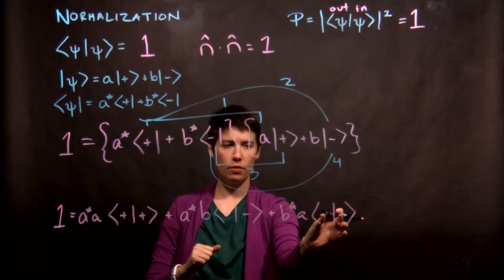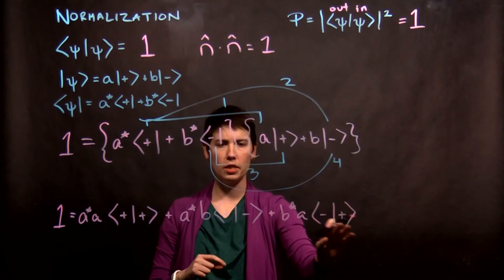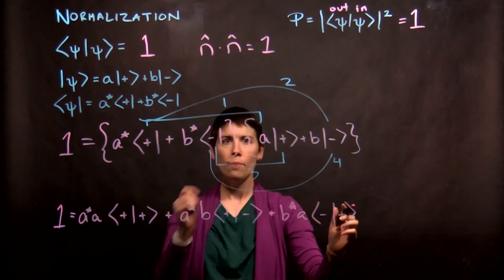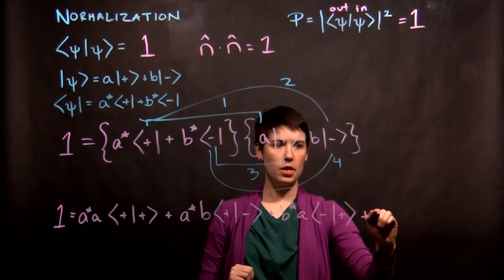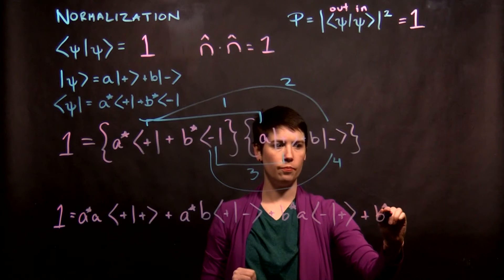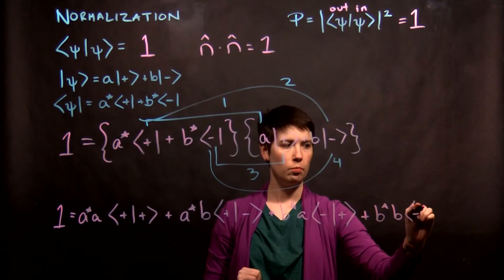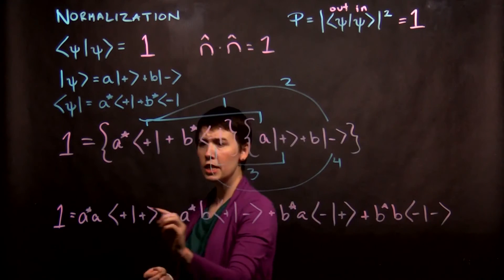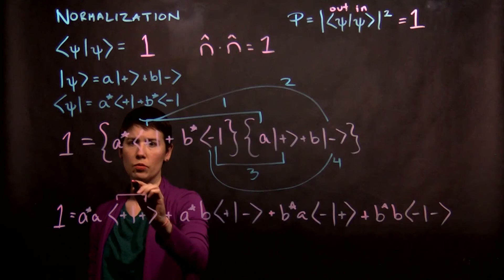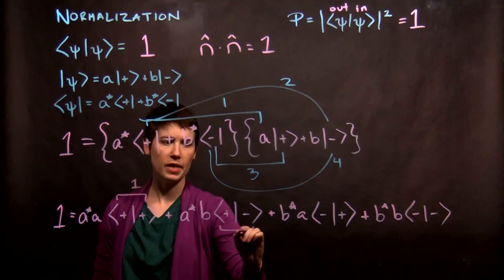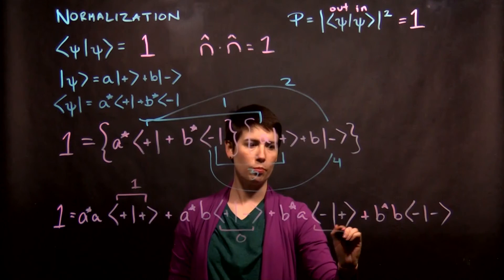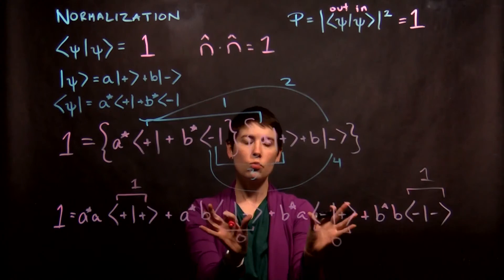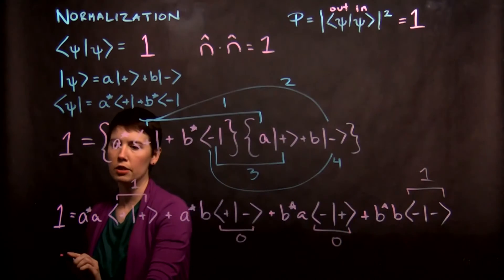And be careful with your writing so that it's kind of clear what your states are. Try not to crowd things together too much. And then the fourth term is B star B minus minus. So again, that inner product now, here, of plus with plus is equal to one, plus with minus is zero, minus with plus is zero, minus with minus is one. So these two terms are just going to completely drop out.